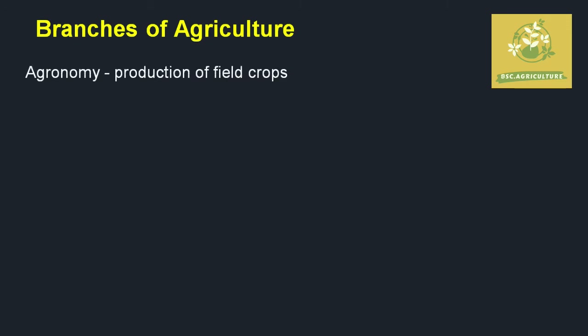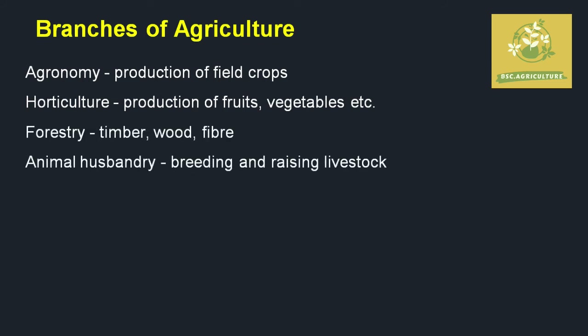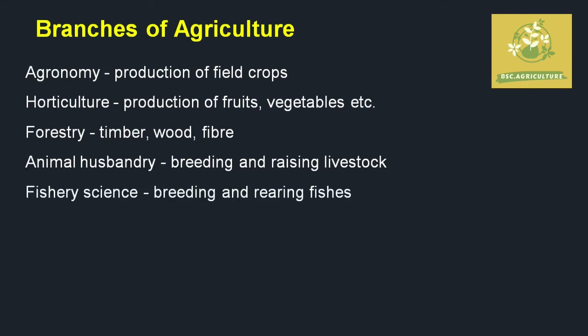The branches of agriculture include: Agronomy — production of field crops; Horticulture — production of fruits and vegetables; Forestry — timber, wood, and fiber; and Animal Husbandry — breeding and raising of livestock such as chickens for meat, goats for mutton, and cows for milk and meat in foreign countries.